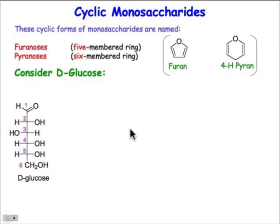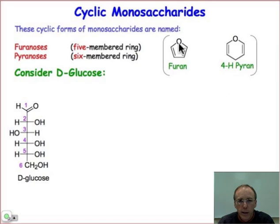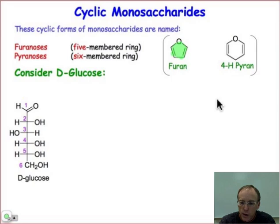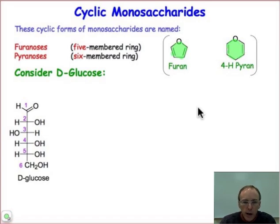Let's take a look at the case of glucose. If we form a five-membered ring, we're going to call those furanoses, after the parent compound furan — a five-membered ring with four carbons and one oxygen atom. We'll call them pyranoses if we form six-membered rings where there's one oxygen and five carbon atoms, after the parent compound pyran.